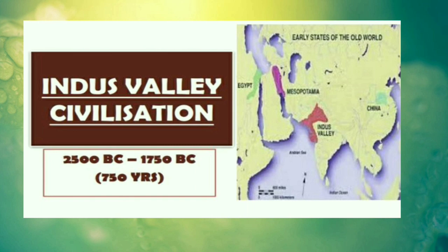Now here we are talking about the Indus Valley Civilization. The period of the Indus Valley Civilization is 2500 BC to 1750 BC. The whole period of the Indus Valley Civilization is 750 years.